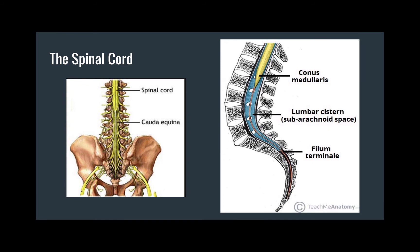This is important for procedures like lumbar punctures, when you need to sample and access the cerebrospinal fluid within the subarachnoid space without interfering with neural structures or causing damage. In embryological development, the conus medullaris is actually even with the vertebral segments. But by birth, due to that growth disparity, it will be located more inferiorly around L3 to L4. Following additional development into adulthood, the conus medullaris rises to L2 to L3, meaning lumbar puncture can be done slightly more superiorly in an adult than in a newborn.